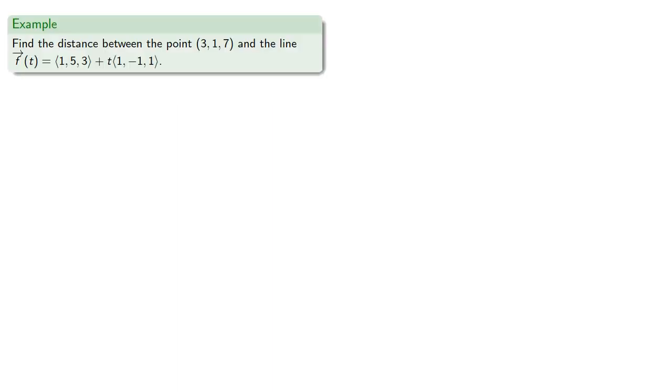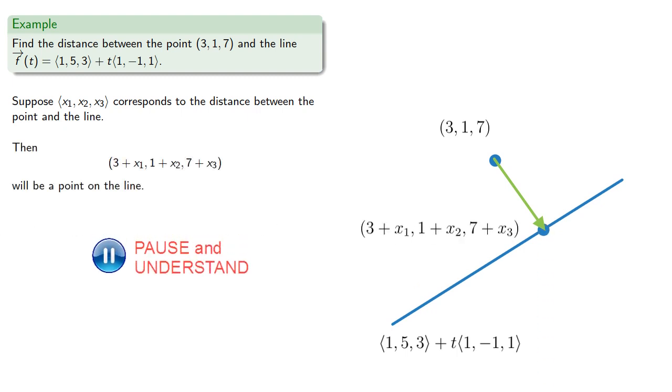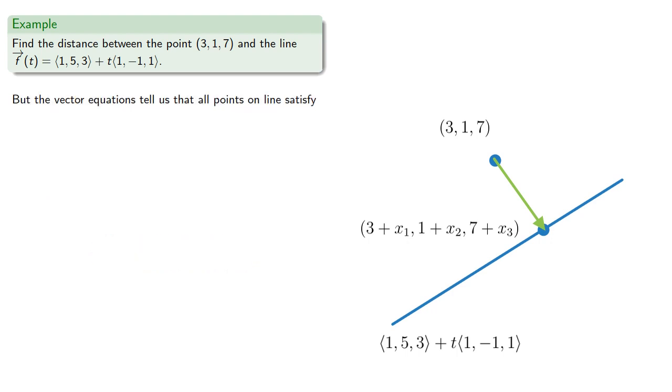Let's consider our problem of finding the distance between a point and a line given in vector form. Suppose we have some vector that corresponds to the distance between the point and the line. Then we can use that vector to find a point on the line, but the vector calculations tell us that all points on the line satisfy for some t.